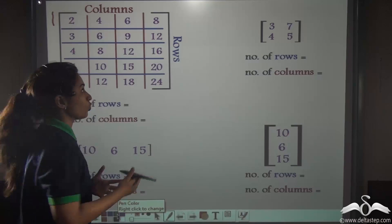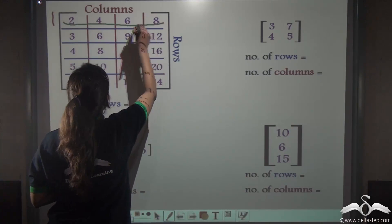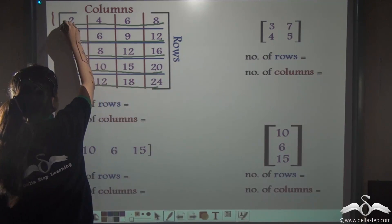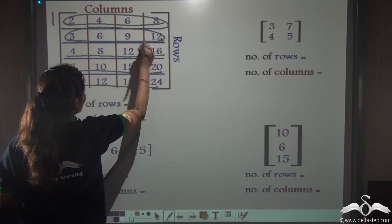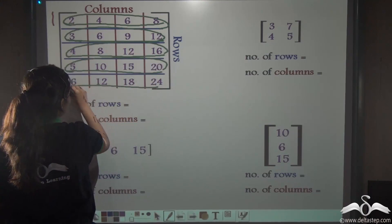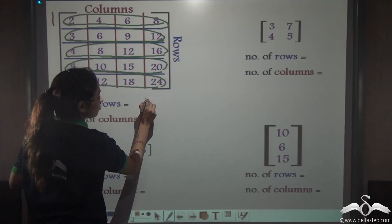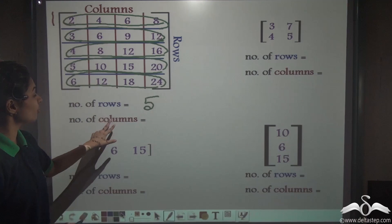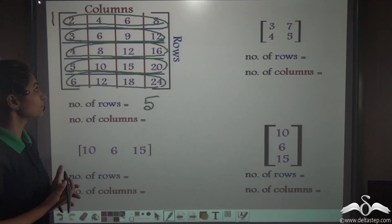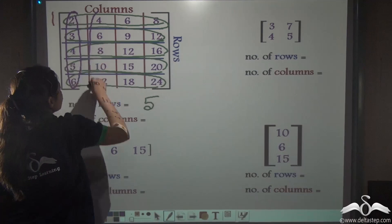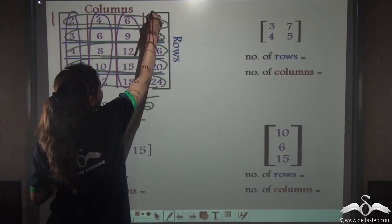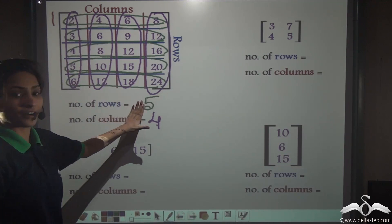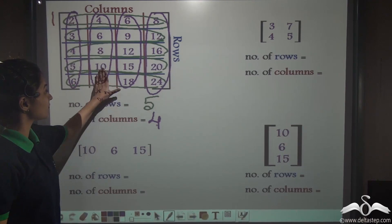First of all, we will start counting the number of rows: 1, 2, 3, 4, 5. So I can see 5 rows in this matrix. Now, what about the number of columns? Just count: 1, 2, 3, 4. You can see that the number of rows in this matrix are 5 and the number of columns are 4.